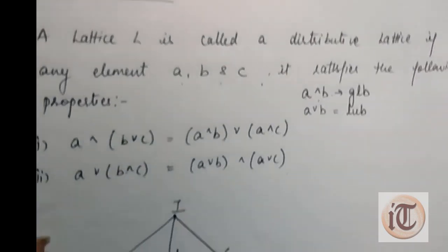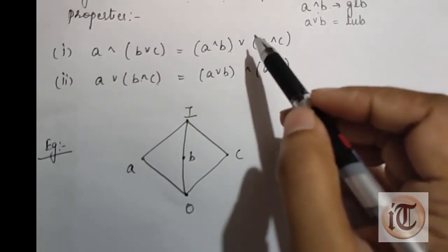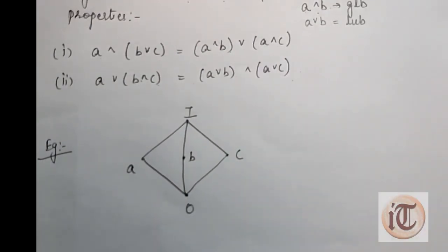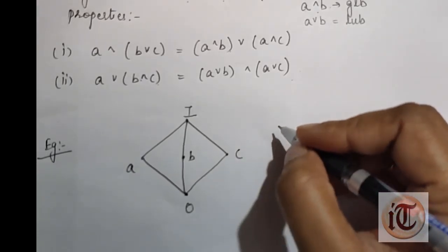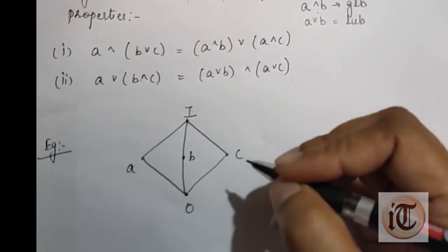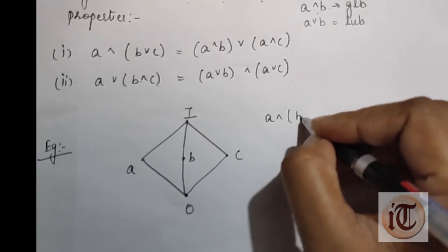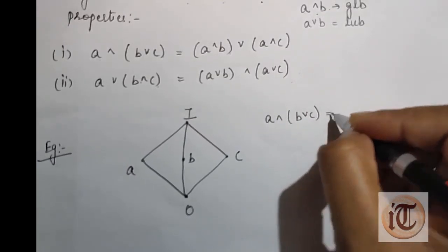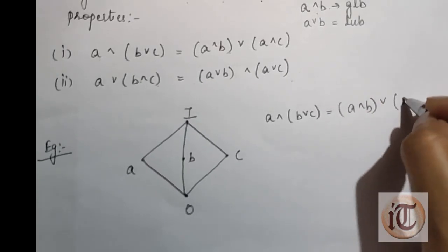Let's take an example. Here is the Hasse diagram. If any one of the two conditions does not satisfy for a particular lattice, then that lattice is called a non-distributive lattice. For this example, we are determining whether this lattice is distributive or not using the condition: A ∧ (B ∨ C) = (A ∧ B) ∨ (A ∧ C).